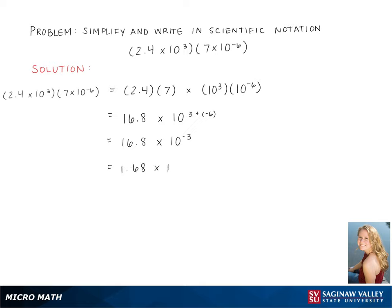Moving the decimal point over 1 to put us into scientific notation is our next step. Then we need to add the exponents again. This gives us a final answer of 1.68 times 10 to the negative 2.